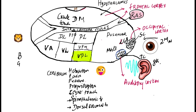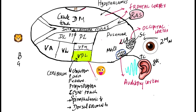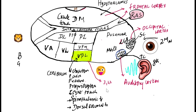So the afferent from VPL — where does it go? The sensory cortex, areas 3, 1, 2 — the sensory cortex.